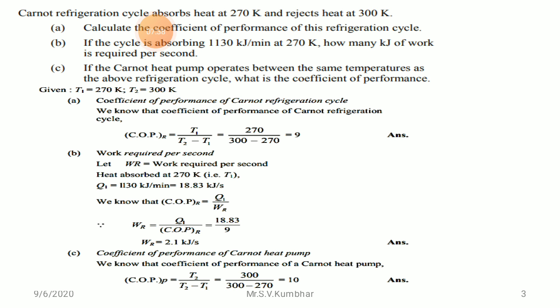The third question asks us to determine the COP of the Carnot heat pump operating between T1 = 270 K and TH = 300 K. COP of heat pump = TH upon (TH minus TL) = 300 upon (300 minus 270) = 300/30 = 10. So COP of the heat pump is 10.